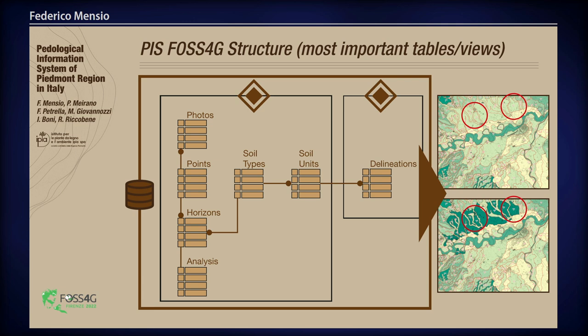There is an example of two maps. On the top we have the original map, and on the bottom is a map derived by a change in the soil type classification — it's a land capability use of soils. Pedologists can change some parameters: the soil type changes, the soil unit changes, and the classification of delineation soil changes. All this process is synchronized and in real time.